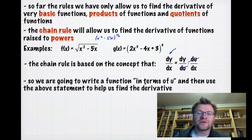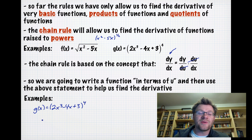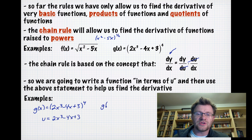What we're going to do is write the function in terms of u and then use that statement to help us find the derivative. For the function g(x) = (2x³-4x+3)⁴, we make a substitution where u is the function inside the brackets, so we can rewrite this as g(u) = u⁴, and then take the derivative of that.